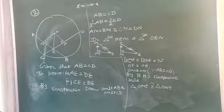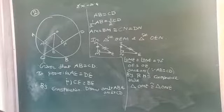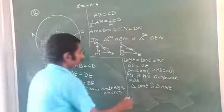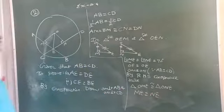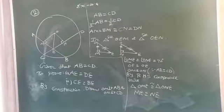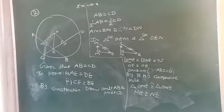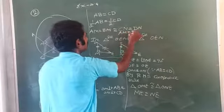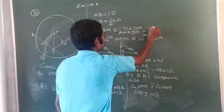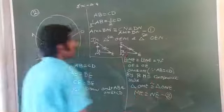After that, what can we say? ME equal to NE — we can say that by CPCT. Let AM equal to DN be equation number 1, and ME equal to NE be equation number 2.